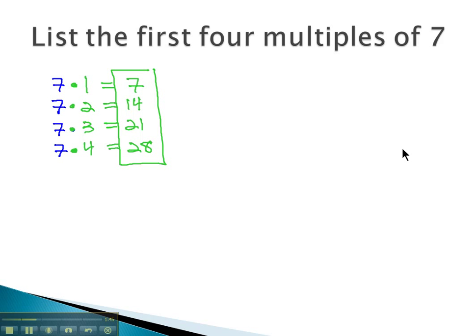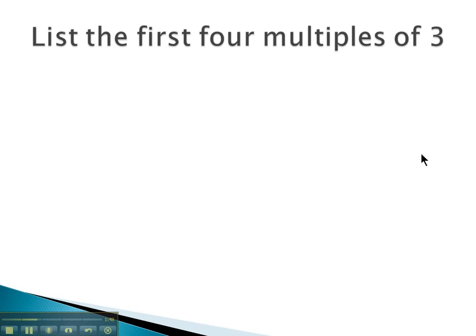Let's do one more example. Let's find the first 4 multiples of 3. Well, this simply means we take 3 and multiply it first by 1. That'll give us 3.